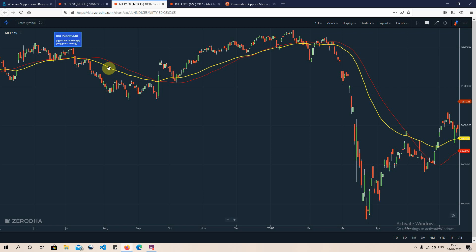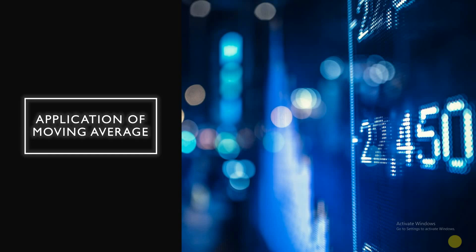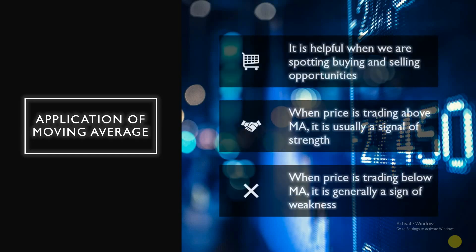Moving averages are helpful for spotting buying and selling opportunities. When the market comes near the moving average line, it gives either a buying or selling opportunity. If the market is trading above the moving average, it presents a better buying opportunity. If the market is trading below it and trying to come near the line, there is a better selling opportunity — because stop losses are tight and there are decent reward opportunities.